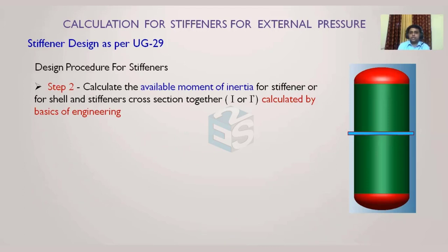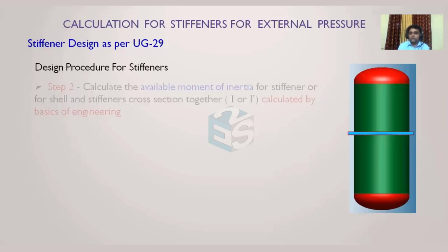In Step 2, we calculate the available moment of inertia for the stiffener alone or for the stiffener and shell cross-section together. This is calculated using the composite section moment of inertia formula from basic engineering strength of materials. There is no single fixed formula provided by the code because the available moment of inertia changes with the shape and size of the section used.